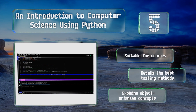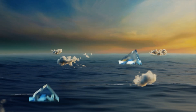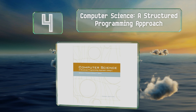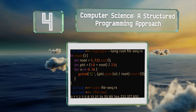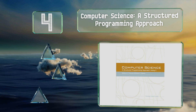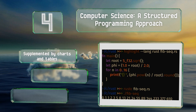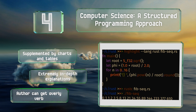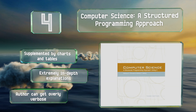At number four, for students who know they'll be working with C, Computer Science: A Structured Programming Approach is the perfect way to get familiarized with the language. It offers a syntax-specific introduction that covers the principles of a subject before moving to implementation. It's supplemented by charts and tables and features extremely in-depth explanations.